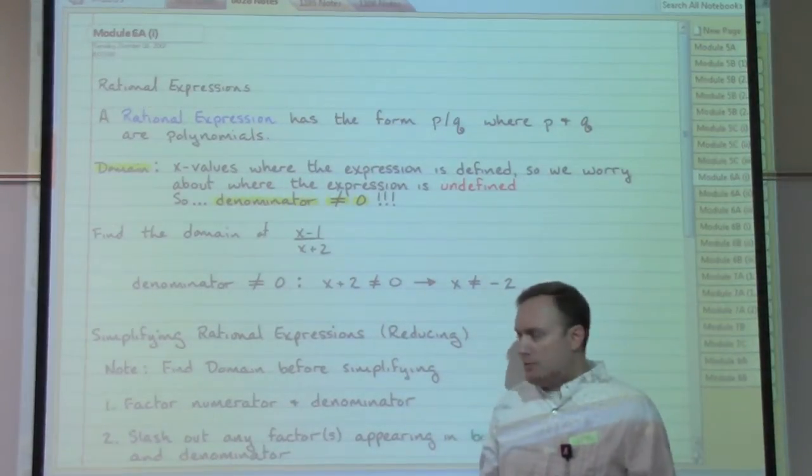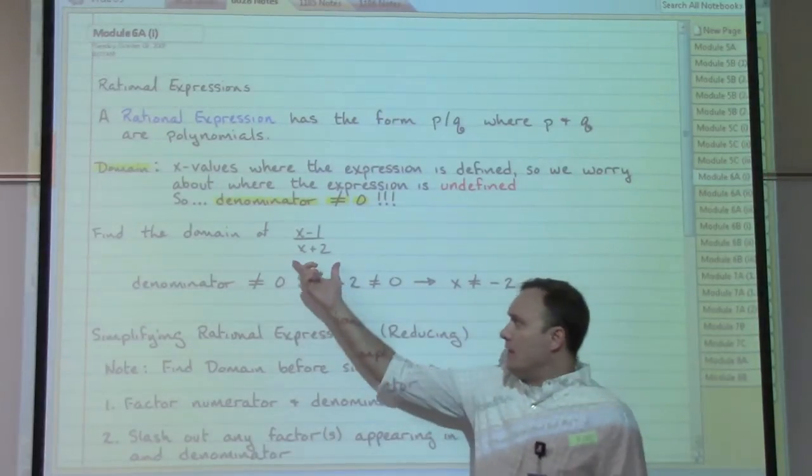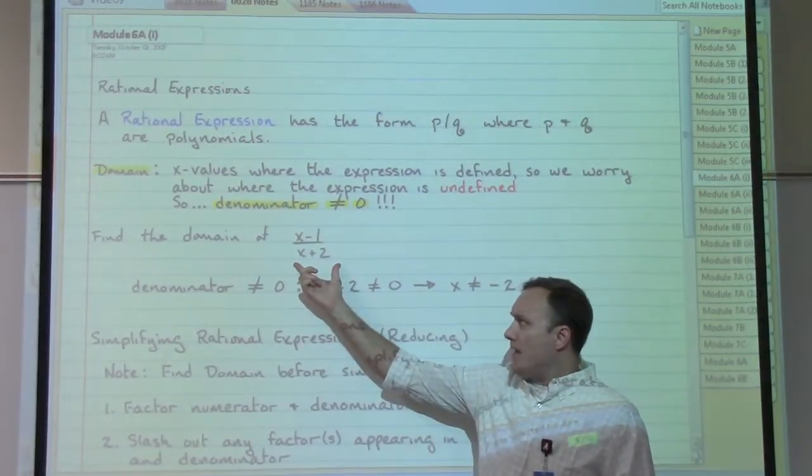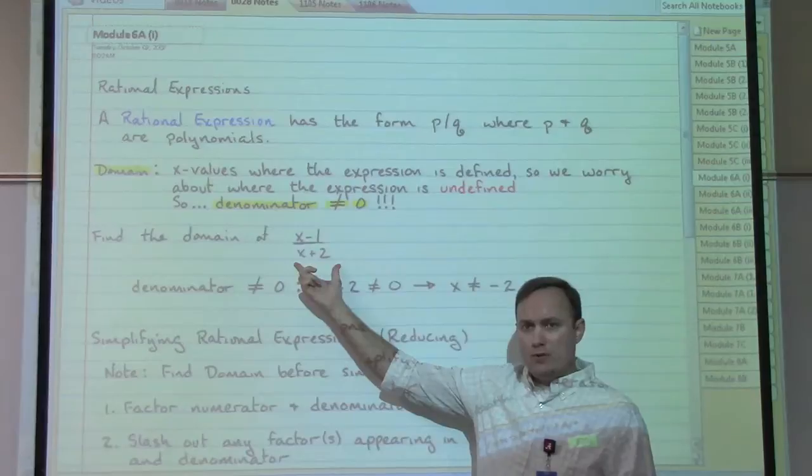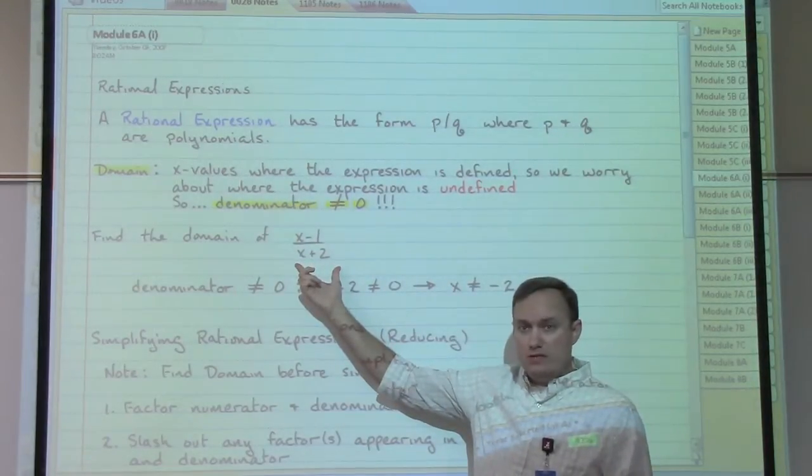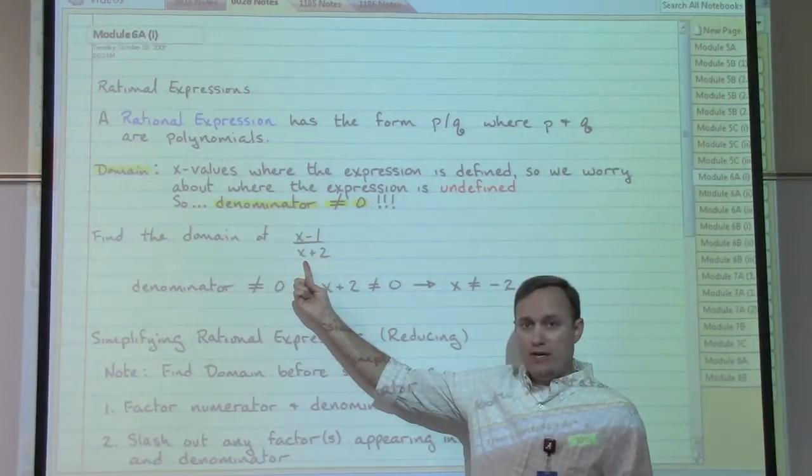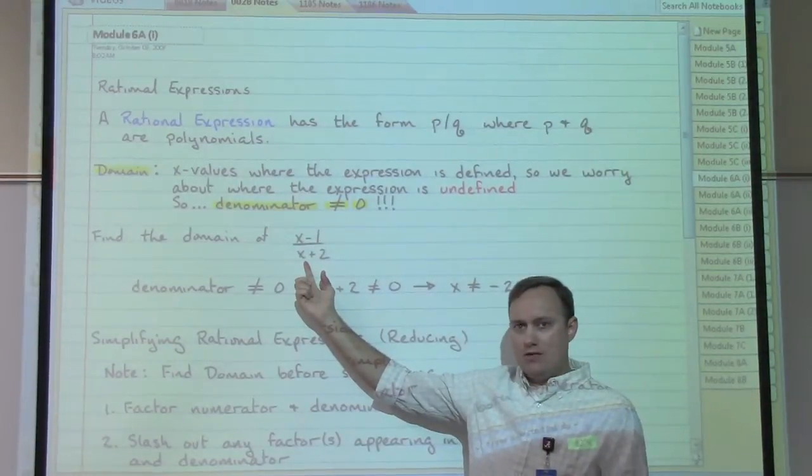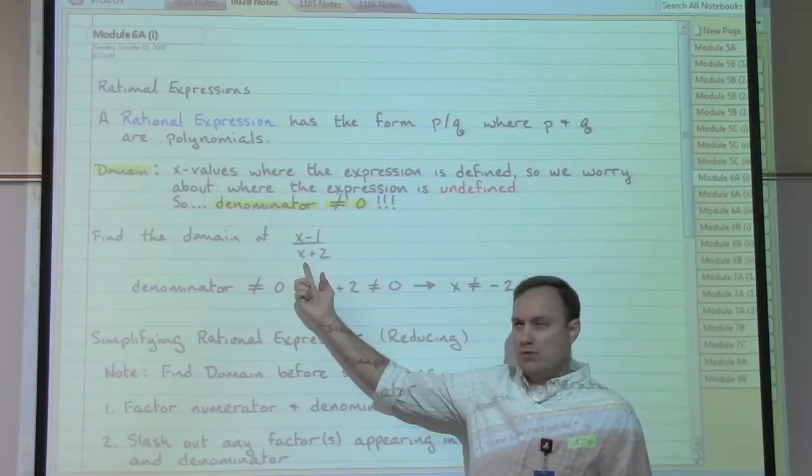So for now, very simple sorts of issues like this one, find the domain of x minus one over x plus two. Where is that denominator going to be zero? What number could we plug in for x that would turn that entire denominator expression into a zero?